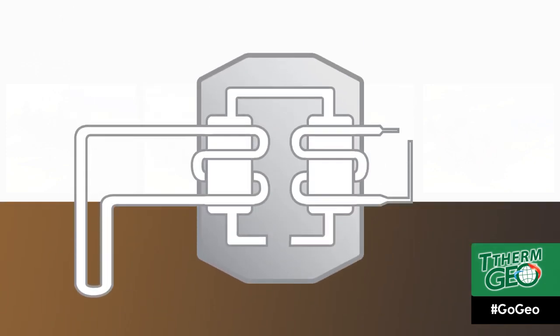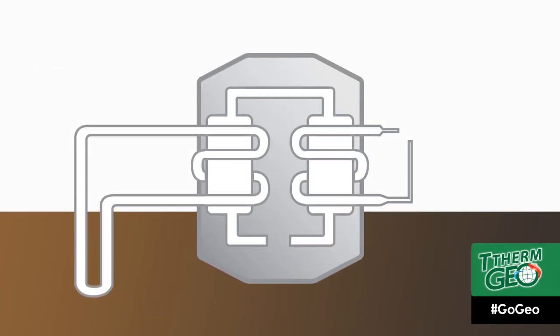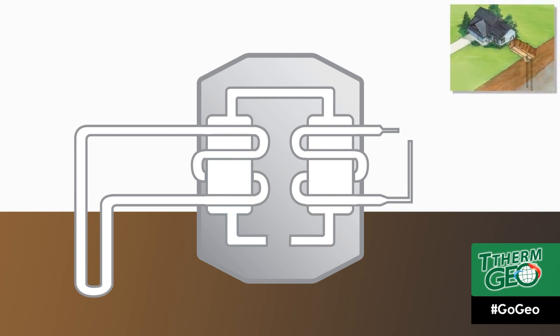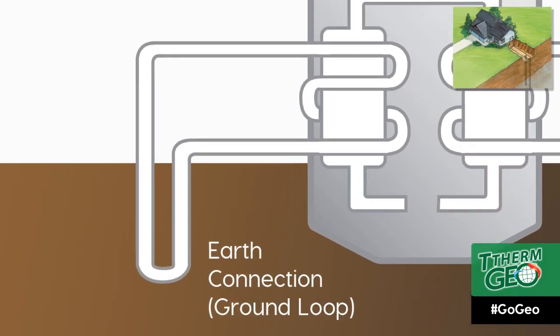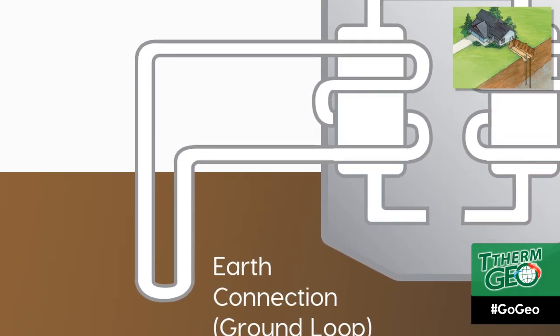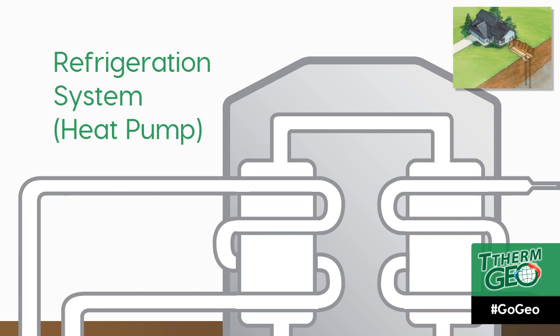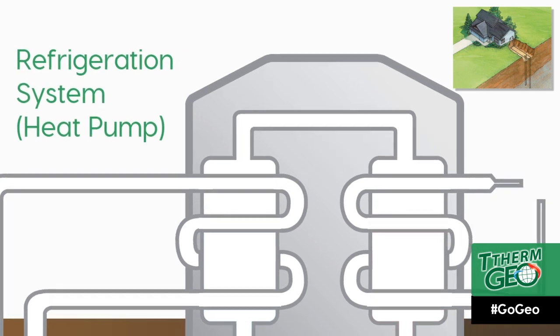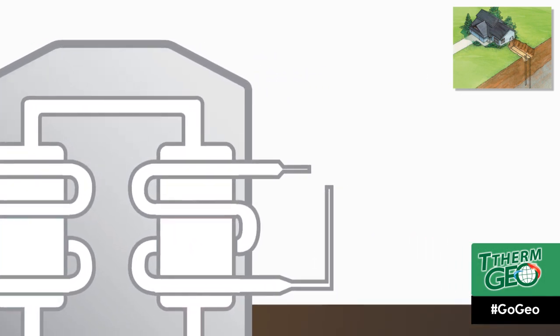Let's take a closer look at how a geothermal energy system works exactly. For the purpose of this video, we will be focusing on a vertical closed-loop system. There are three main parts of the geothermal system: the Earth connection, open or closed-loop; the refrigeration system; and the distribution system.